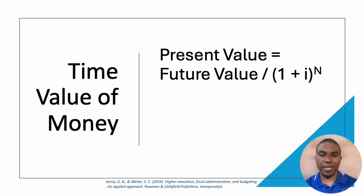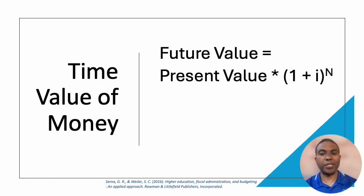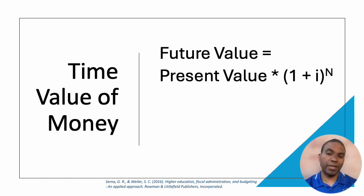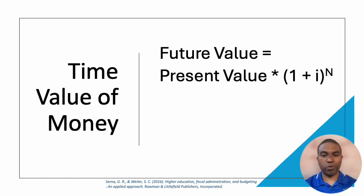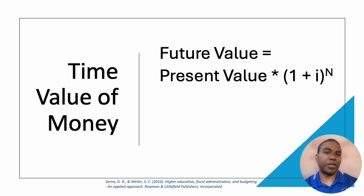This is a formula your finance department can use to calculate present value or future value. If you want to find the future value, you take your present value and multiply it by one plus the interest rate (I), raised to the exponent of the number of discount periods. For example, if it's going to cost $25,000 to do a project today, what will it cost in three years? Based on the math, it's probably going to cost more — maybe because you had to borrow money, and there's a value to those interest payments.